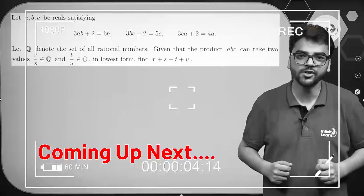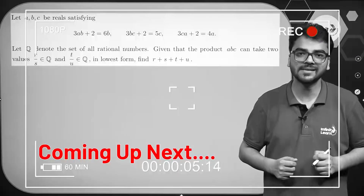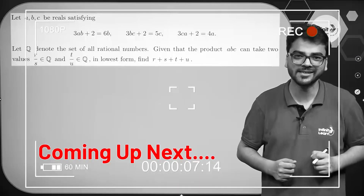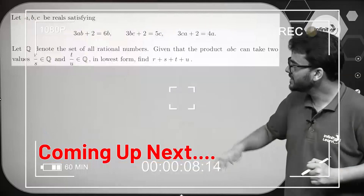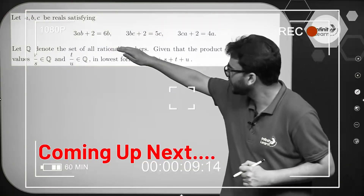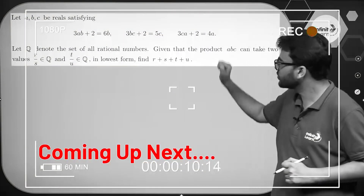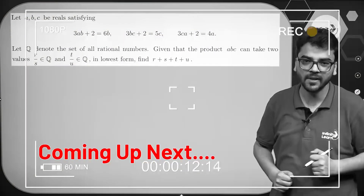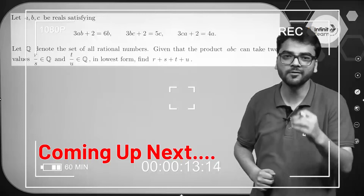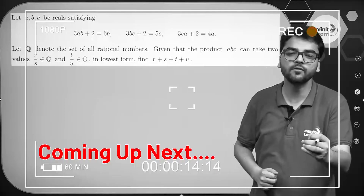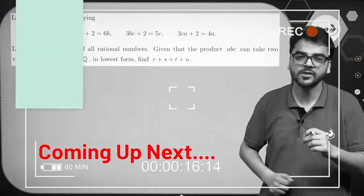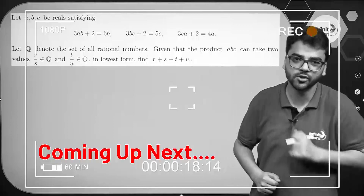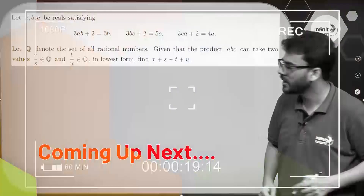Here we have a question which was asked in the IOQM last year. We have three equations in A, B and C and we want to find the values of A, B, C. We can do a couple of substitutions here.